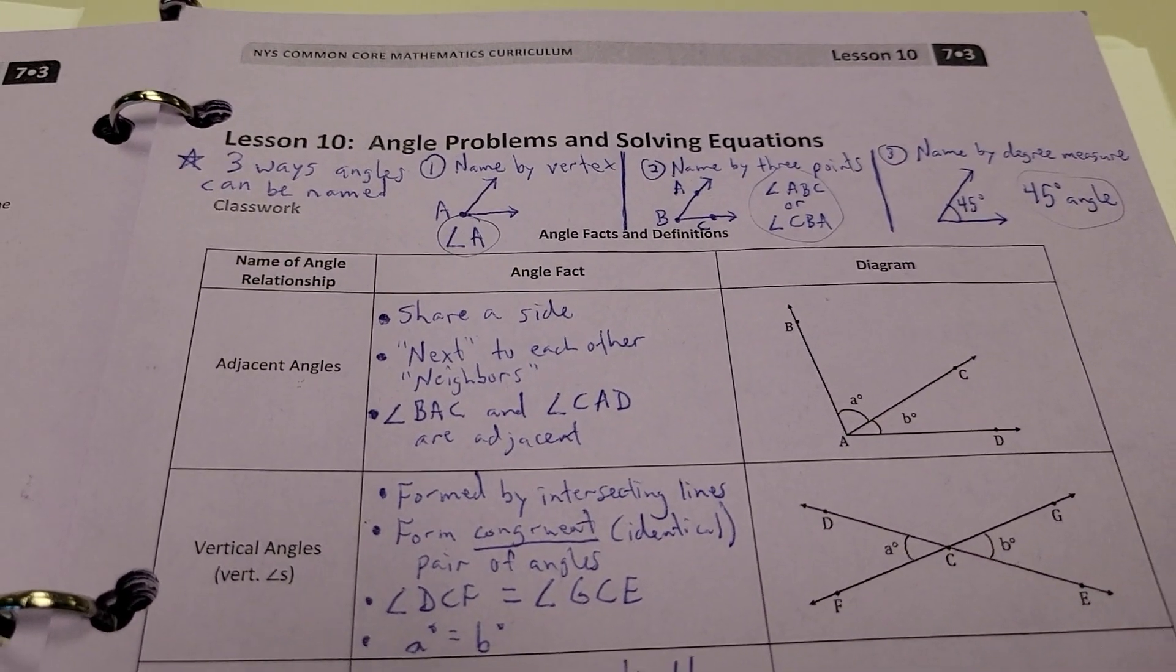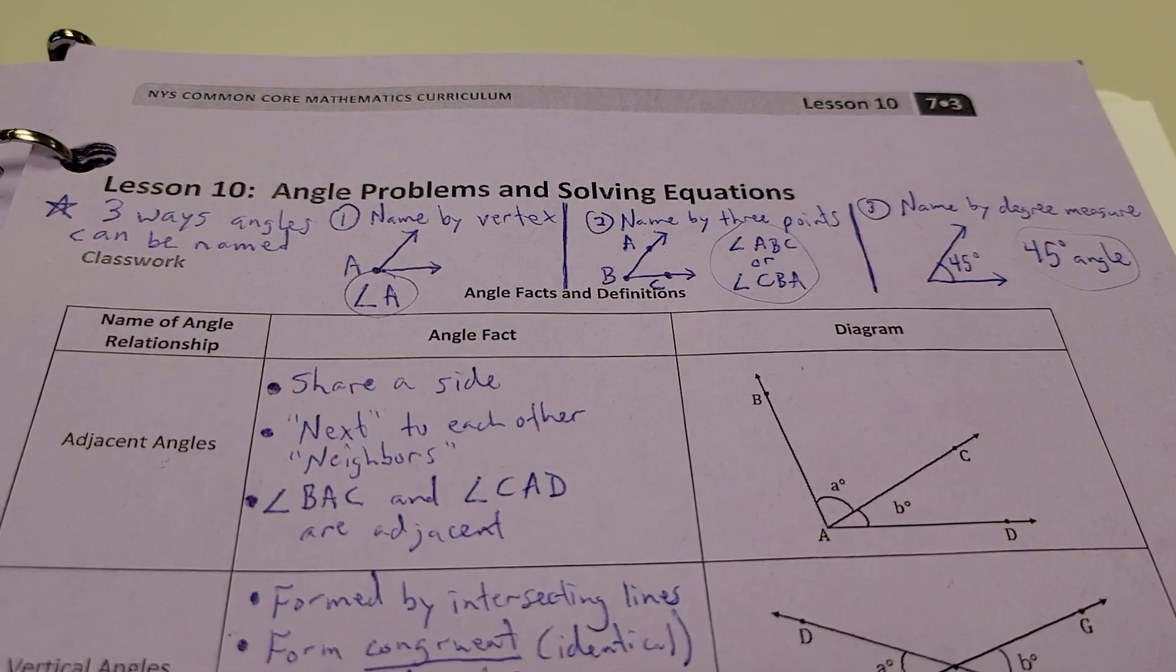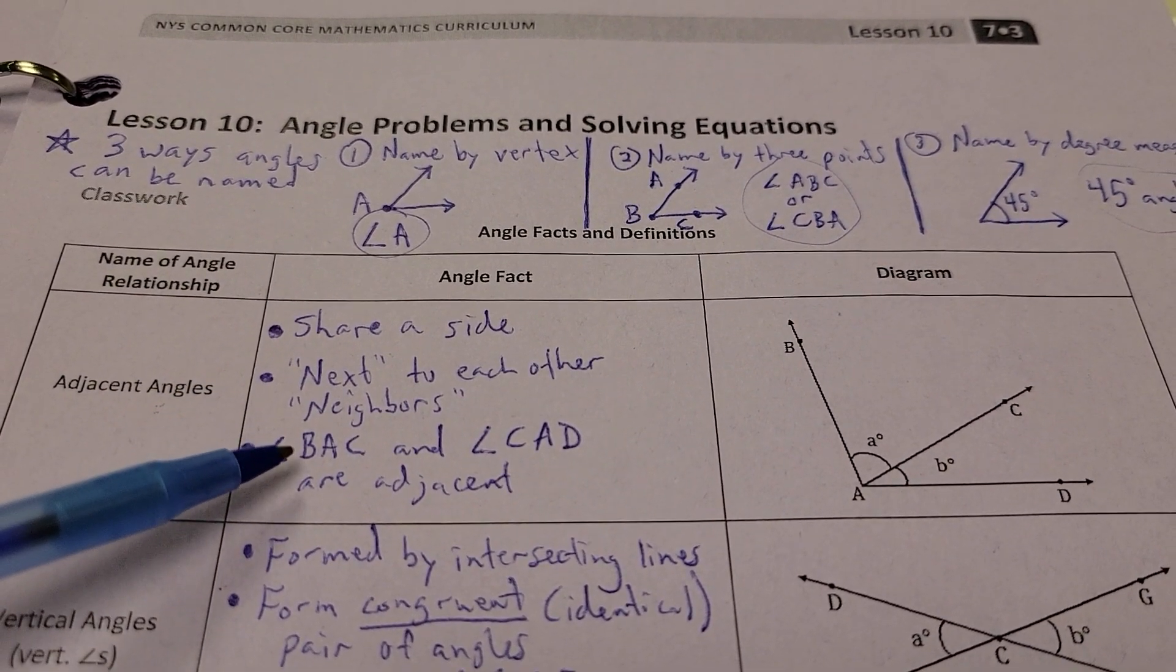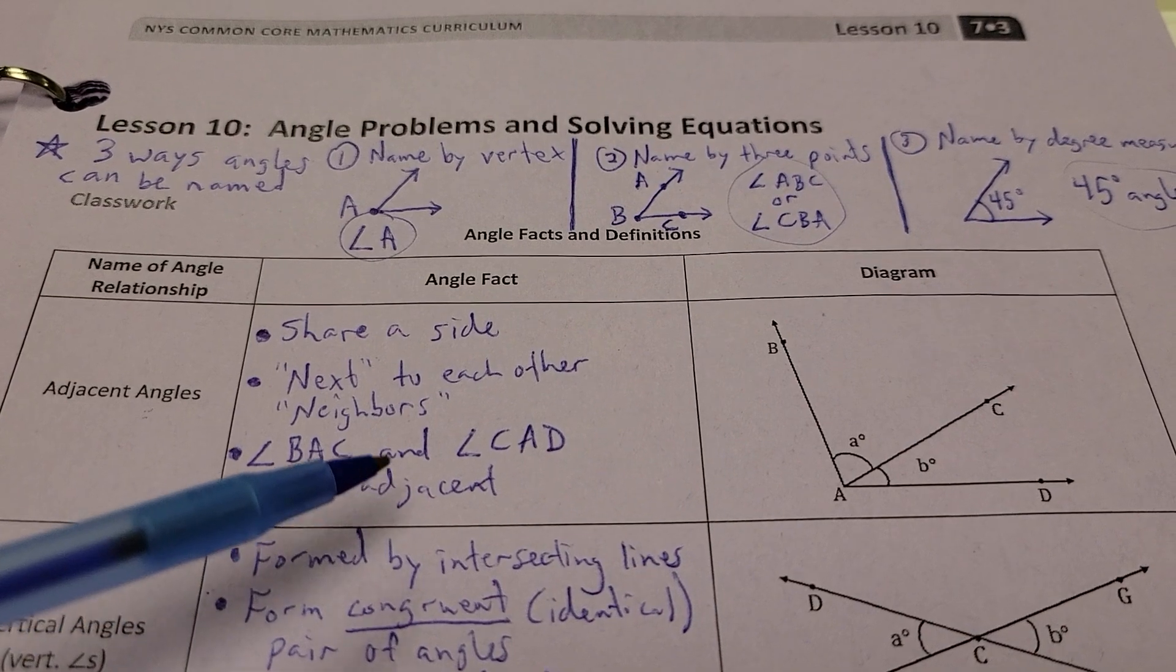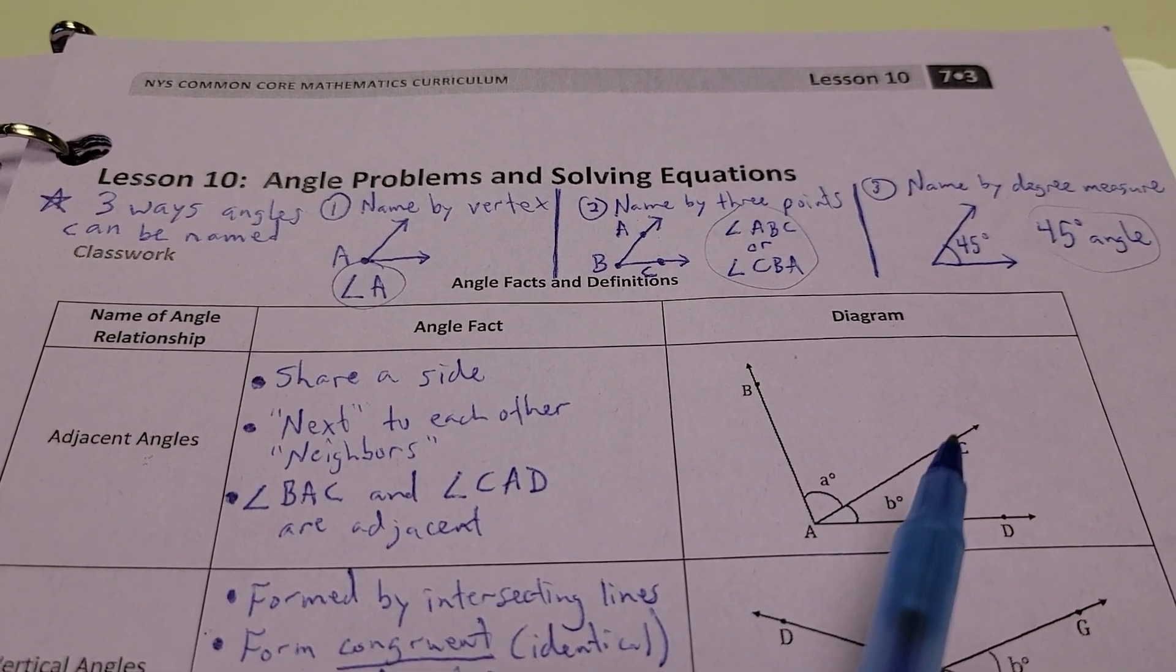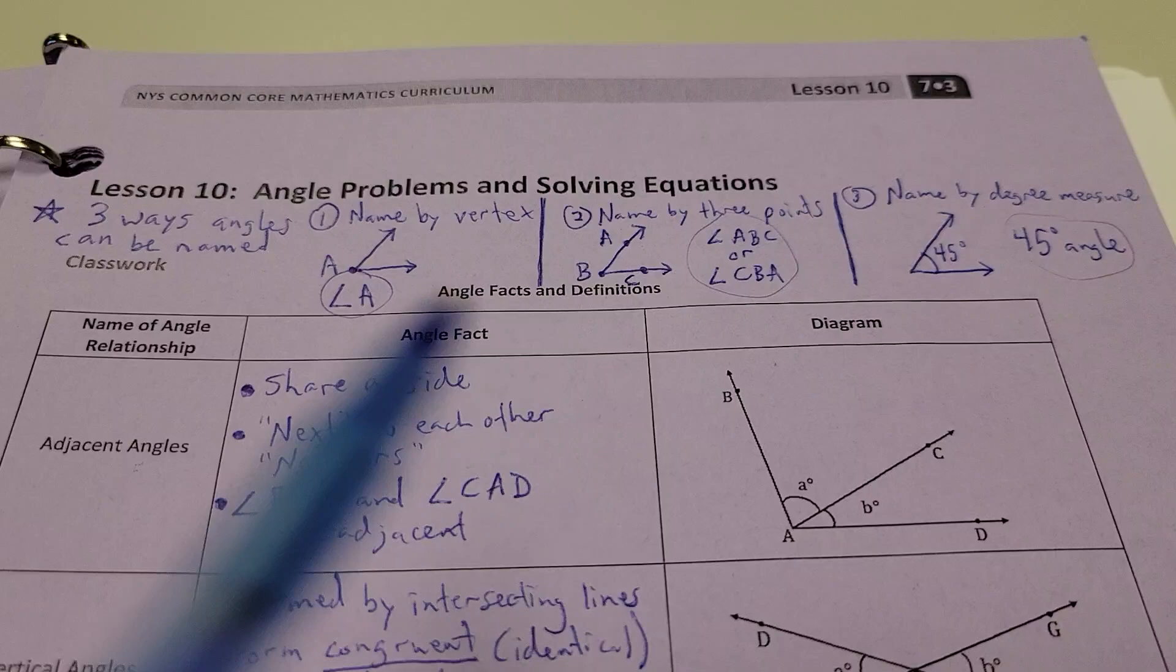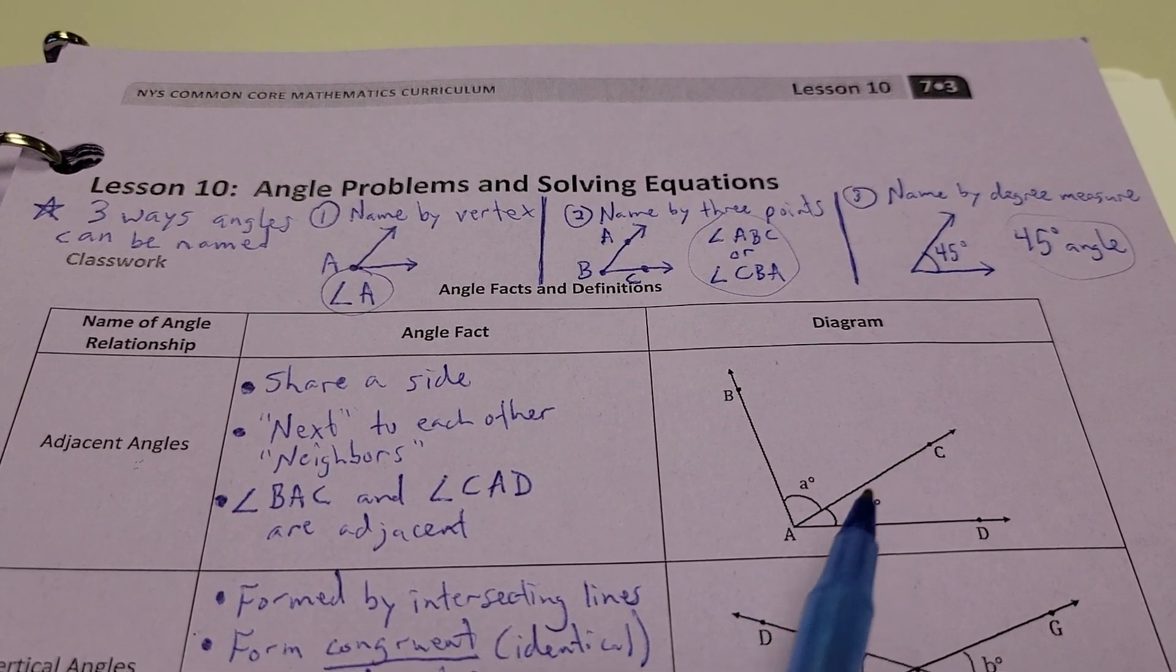Alright, so here is how we are going to set up our equations. They are going to have some type of relationships. First up, adjacent angles. Adjacent angles share a side. They are next to each other. They are like neighbors. So, angle BAC and angle CAD are adjacent in this picture. This angle and this angle are adjacent. They are next to each other. And they share this side. They actually share this ray, AC.